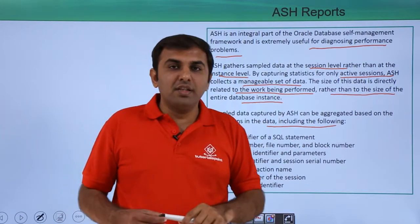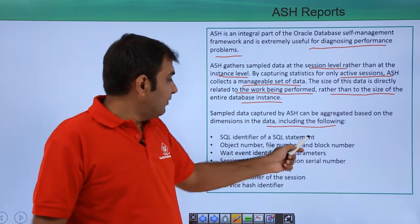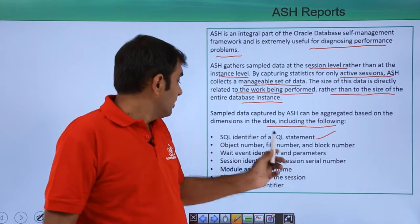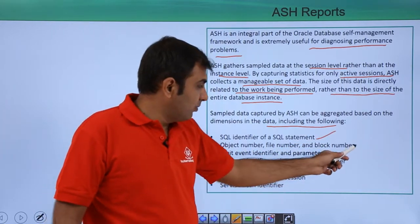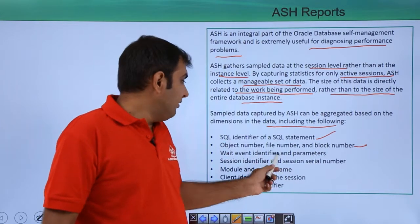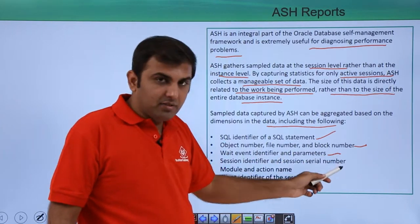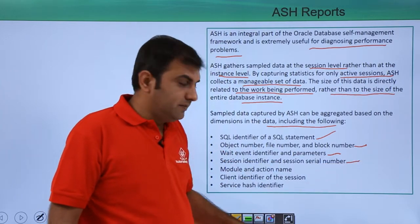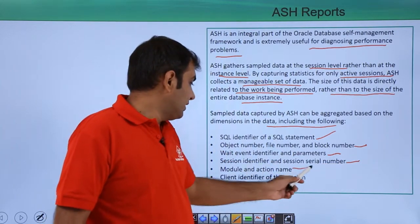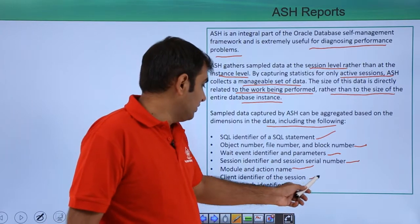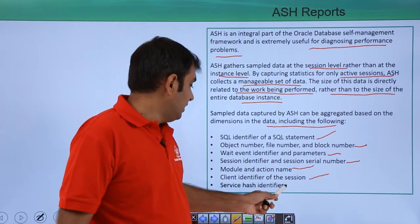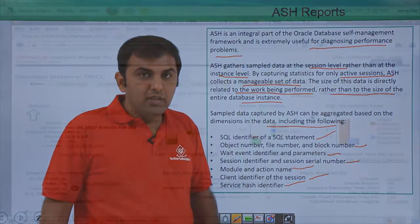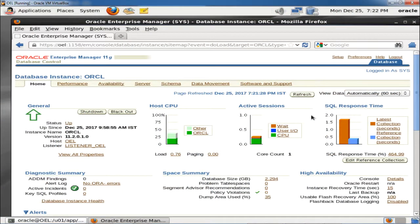Sample data captured by ASH can be aggregated based on dimensions including: SQL identifier of SQL statement, object number, file number and block number, wait event identifier and parameters, session identifier and session serial number, modules and action name, client identification of the session, and service hash identifier. Let us see practically how to create an ASH report.